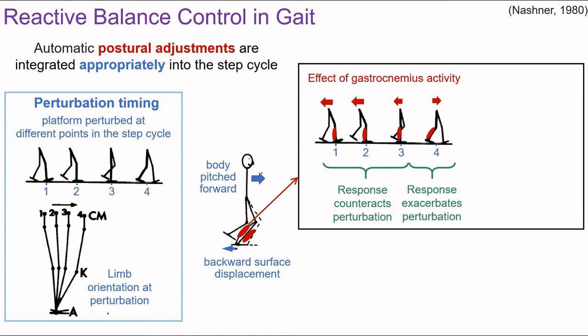Let's consider what the effect of gastrocnemius activity should be as a function of when the perturbation occurs. If the perturbation occurs during loading response or mid-stance — conditions one, two, or three — the resulting plantar flexion torque moves the center of pressure in front of the center of mass, generating a force that counteracts the forward fall. In contrast, if the gastrocnemius is activated during terminal stance when the stance foot is behind the center of mass, the plantar flexion torque will accelerate the forward motion of the body and exacerbate the perturbation. So gastrocnemius activation is only functional in certain parts of the step cycle.